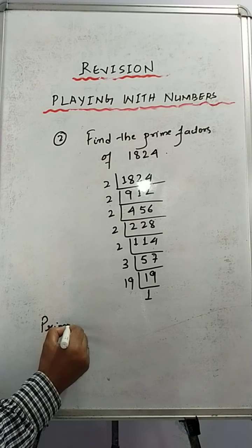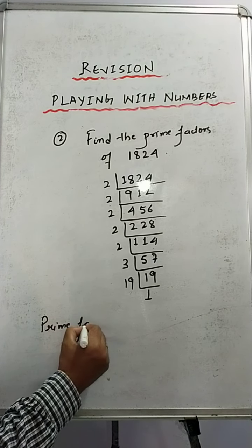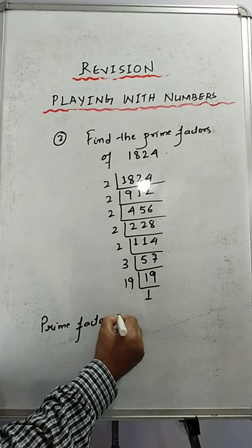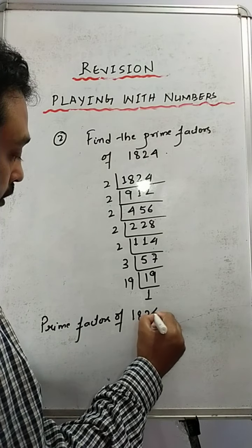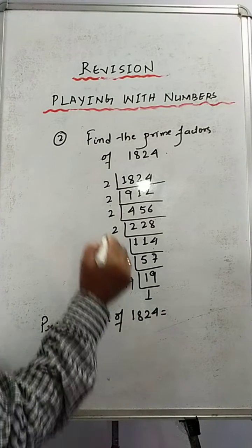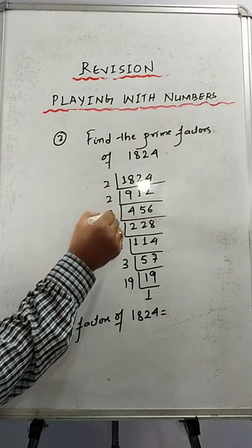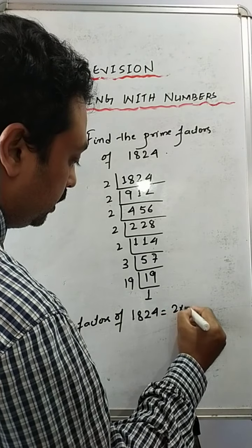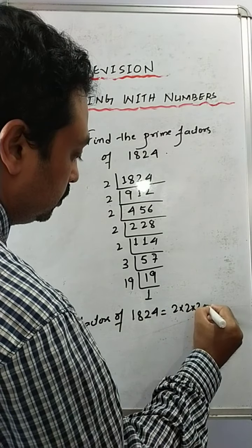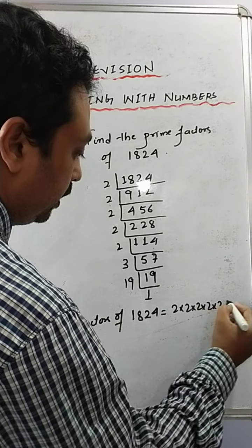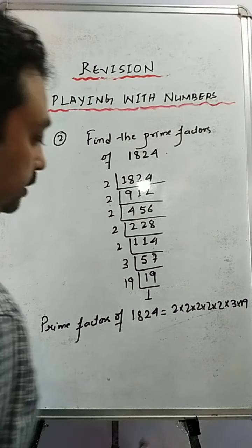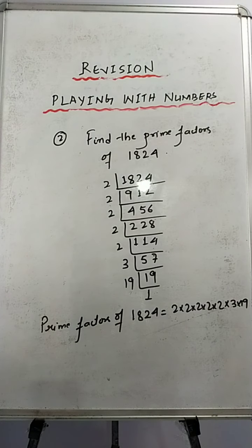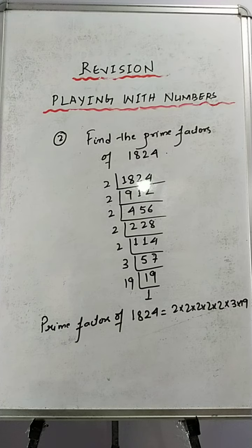The prime factors of 1824 equals 2 to the power 5, into 3, into 19. So these are the prime factors of 1824.